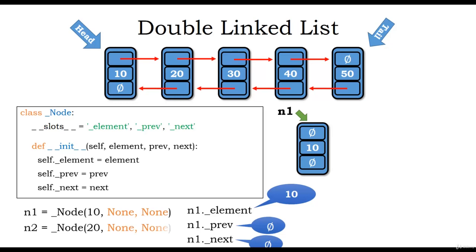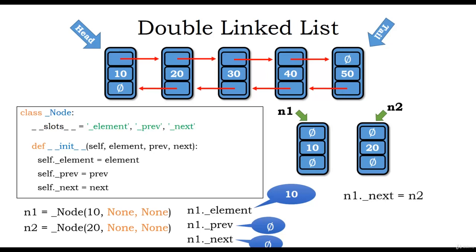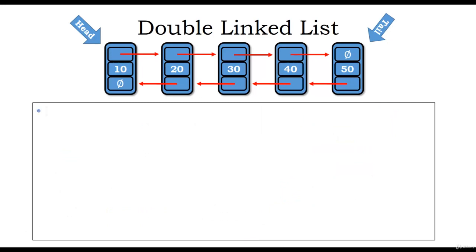We create another node n2 = Node(20, None, None), which creates a doubly linked list node with element 20 and next and previous pointing to null. Then n1.next = n2 assigns the reference of n2 to the next member of n1. And n2.previous = n1 assigns the reference of n1 to the previous member of n2. Now we will look at insert and delete operations in detail.